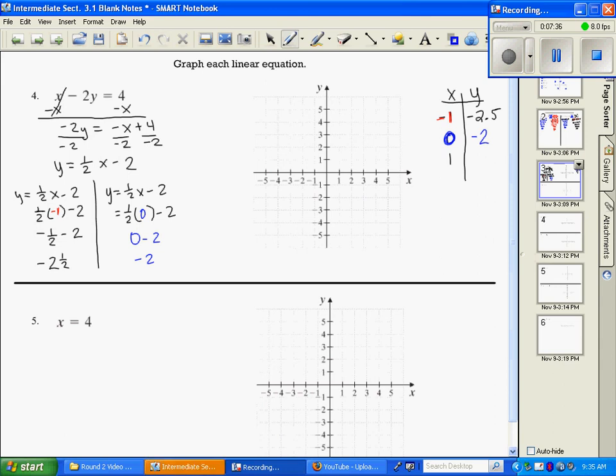I'm going to do it one more time. I think course compass only asks that you plot two points, but the third point kind of helps you check your answer. So if I plug a 1 in for x, because I'm doing this one now, I'm going to get 1/2 - 2, which is -1 and 1/2. If I made it into a decimal, it would be -1.5.